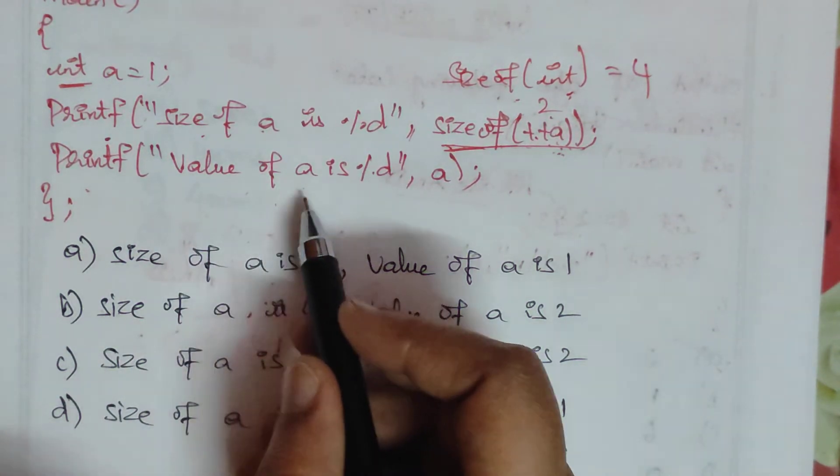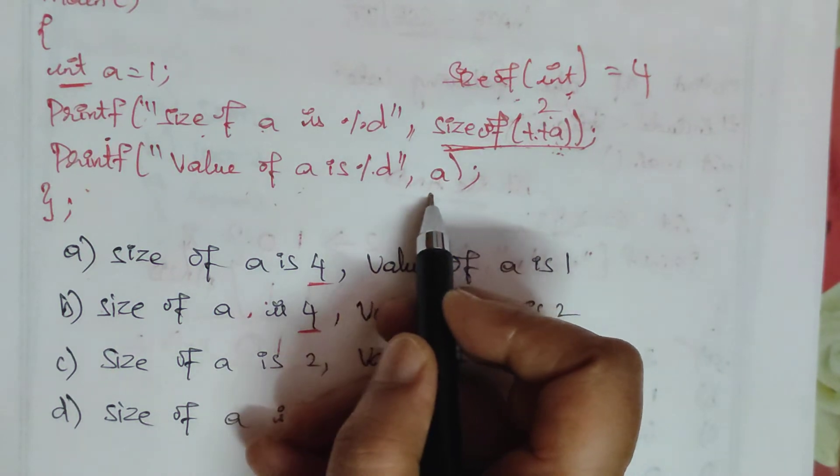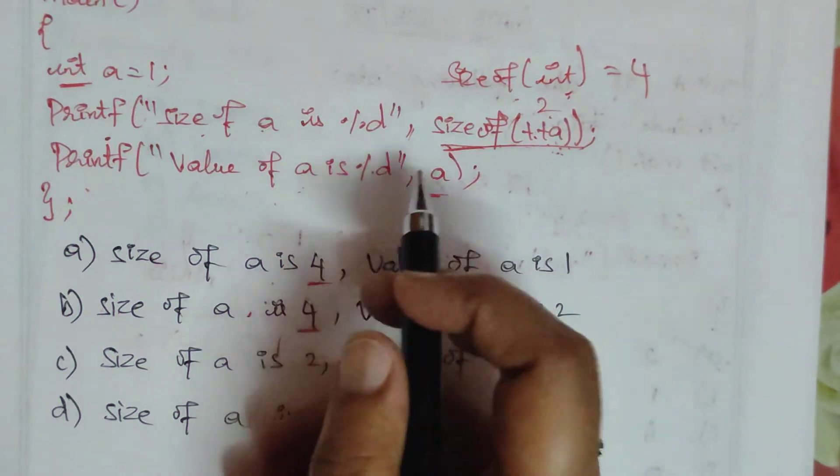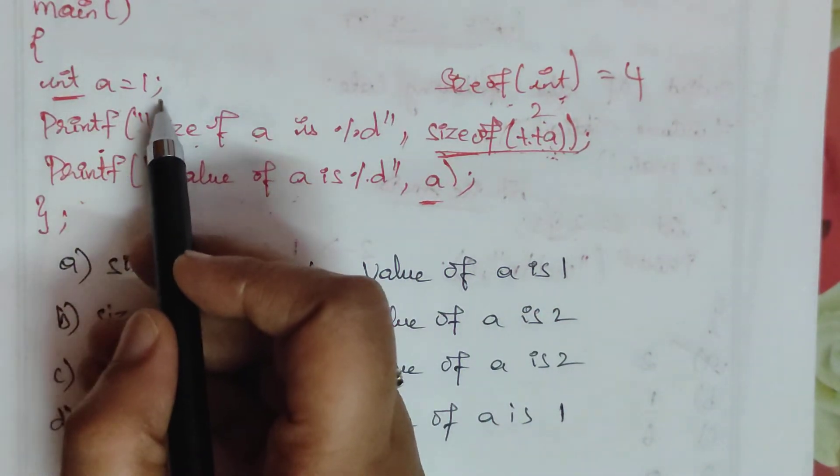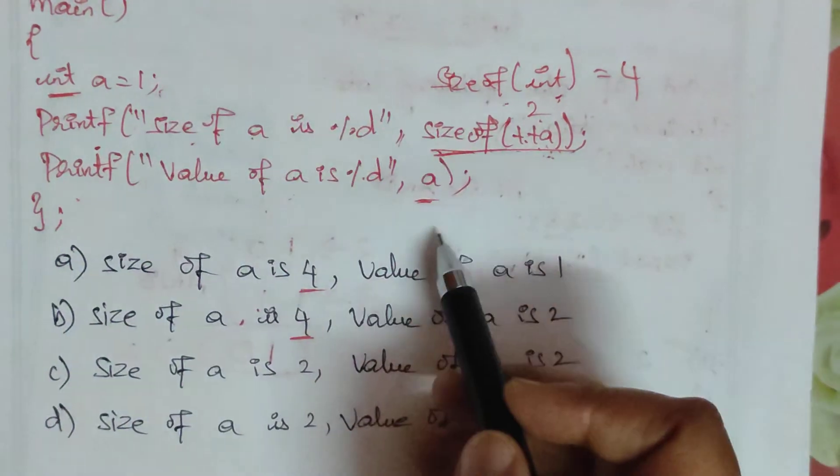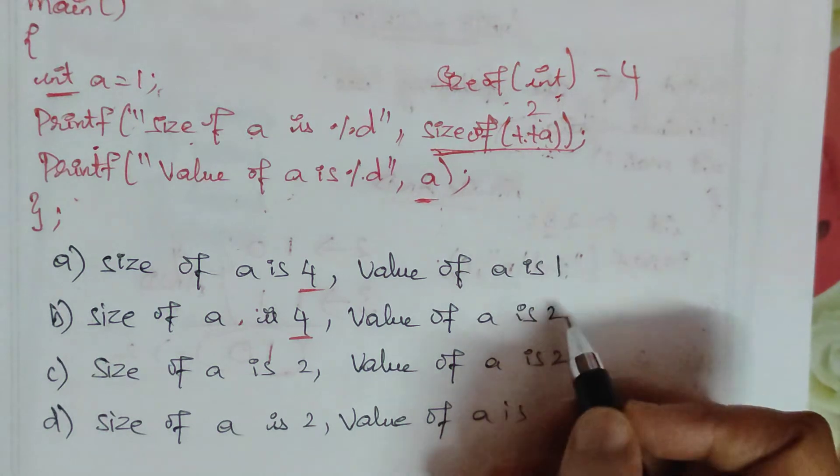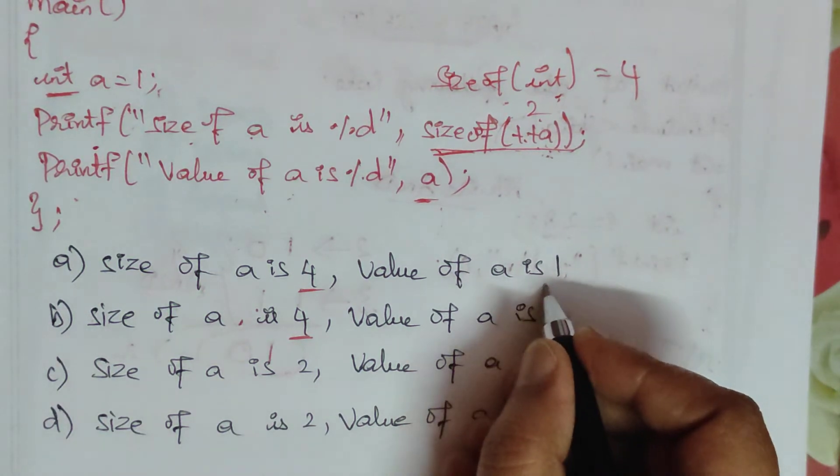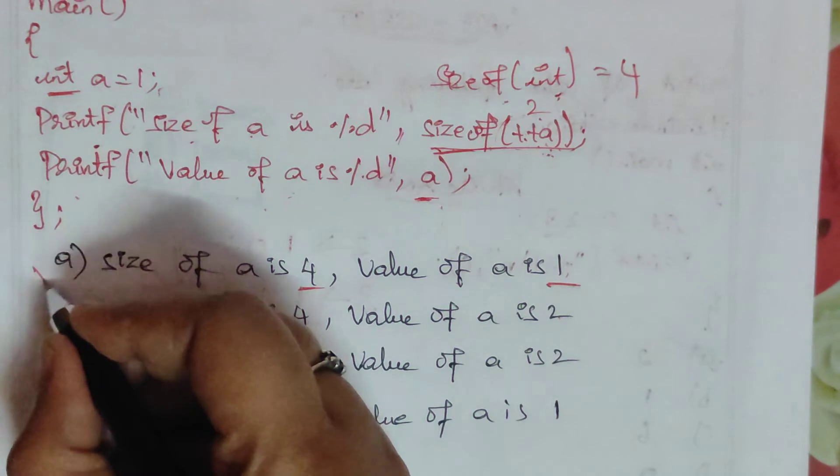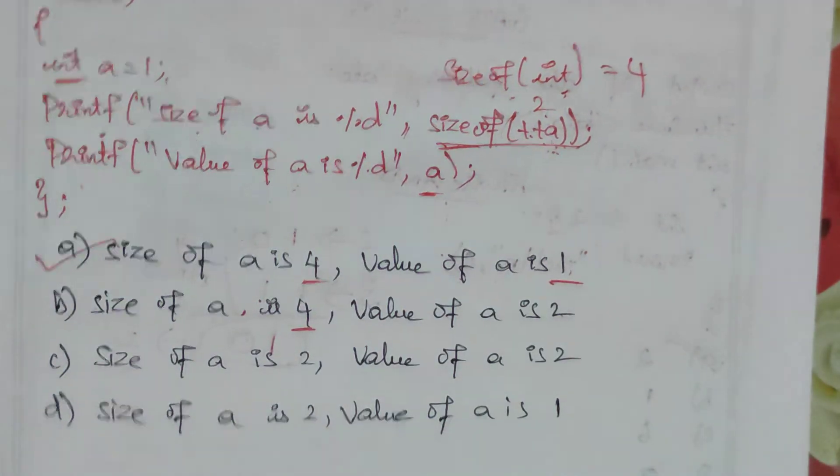Value of a, simply a in printf. We assigned a value of 1, so that is 1. The value of a is 1 in option a. So option a is the right answer.